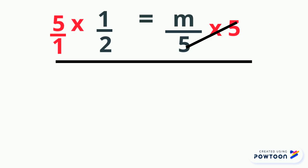5 times 1 is 5, and 1 times 2 is 2, so we get 5/2 or five halves, and we're left with 5/2 = m.